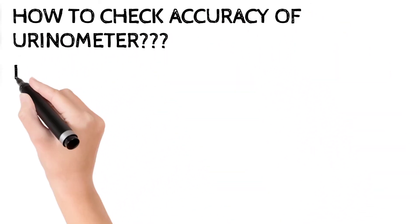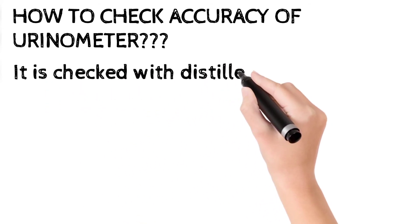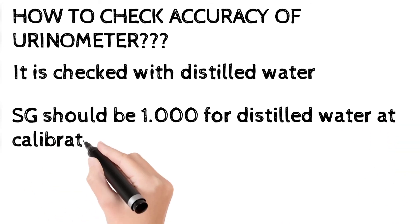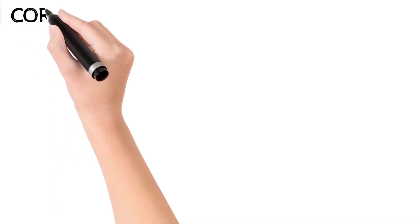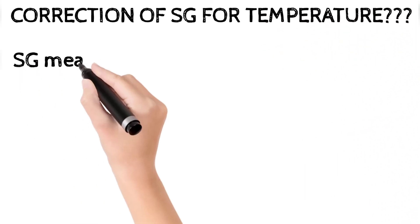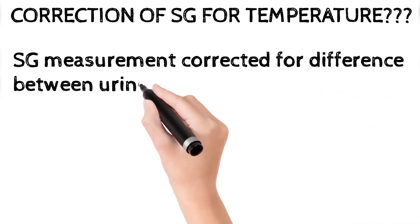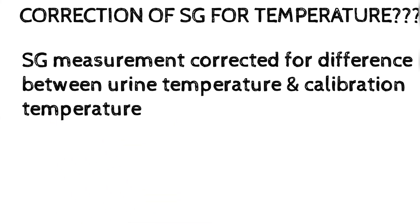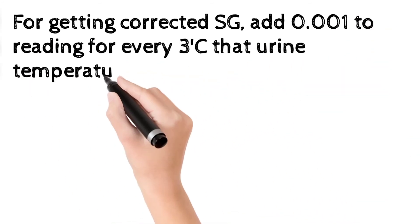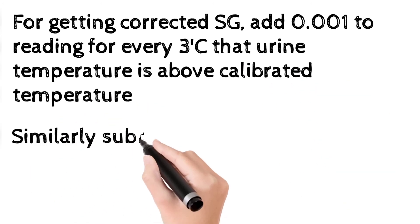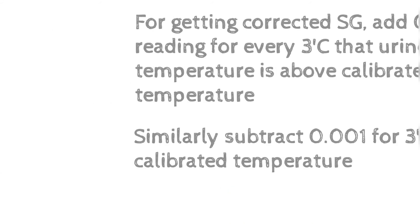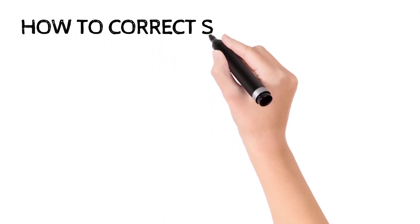To check the accuracy of the urinometer, measure the specific gravity of distilled water, which should read 1.0 at the calibrated temperature. If the urine temperature and the calibrated temperature do not match, you must correct for the temperature. To correct: add 0.001 to your reading for every three degrees the urinary temperature is above the calibrated temperature, and deduct 0.001 for every three degrees it is below.